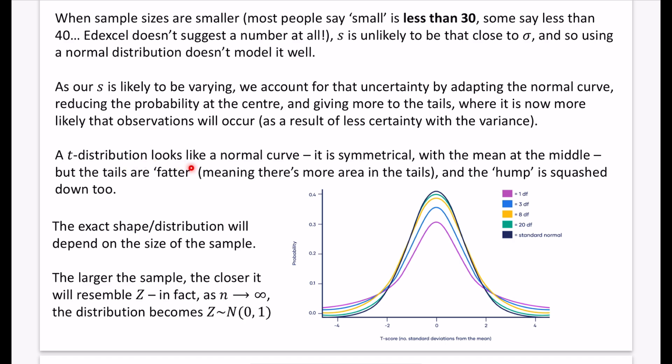So this is the t distribution. It looks like a normal curve. It is symmetrical, which is great. We love the property of it being symmetrical. And the mean is in the middle, but the tails are fatter. That is kind of like a statistical term for us to describe this. If you look at the colored parts compared to the black part, they are fatter at the tails. There's more probability in that section. There's more area in that part. And the hump that's in the middle of the normal distribution has been squashed down too.